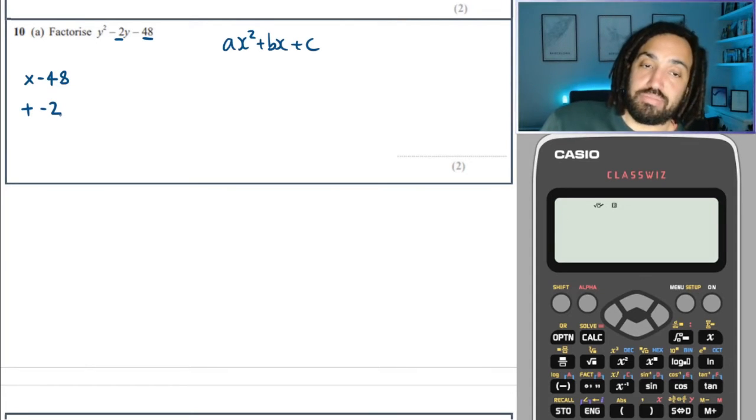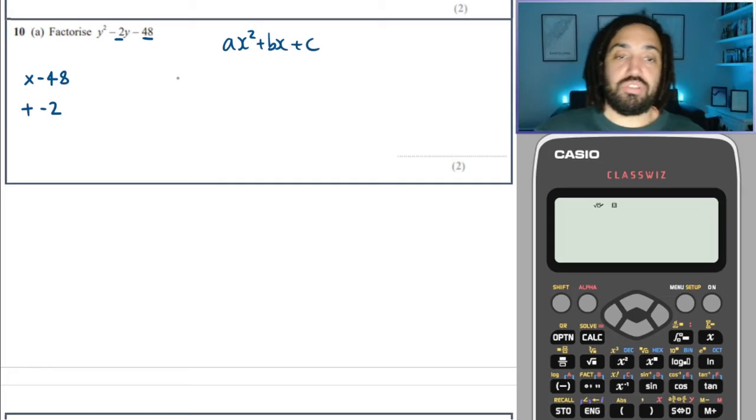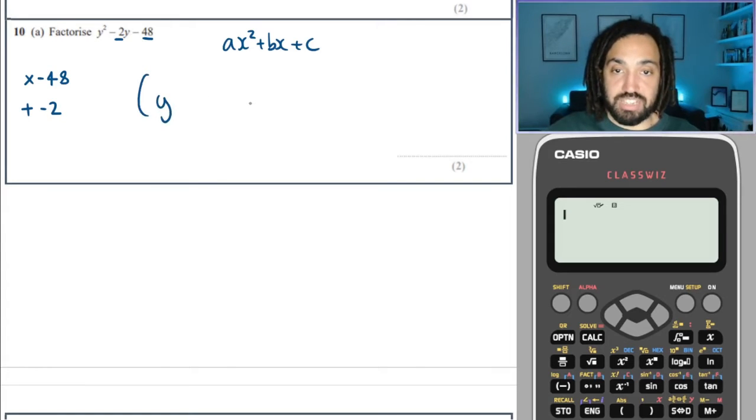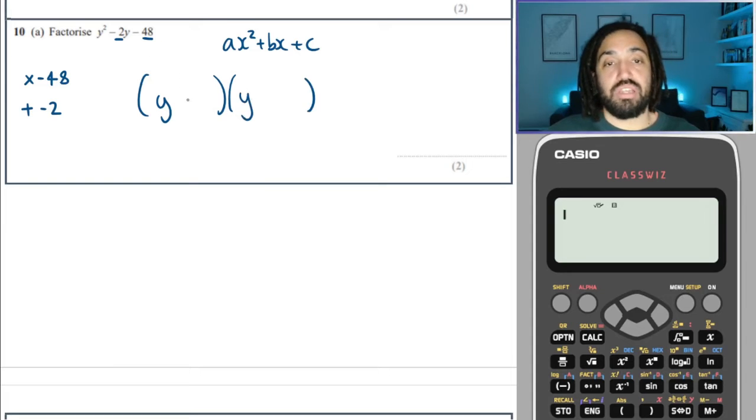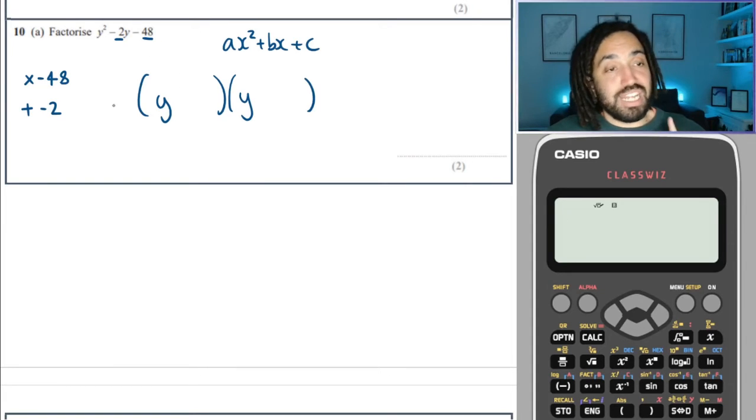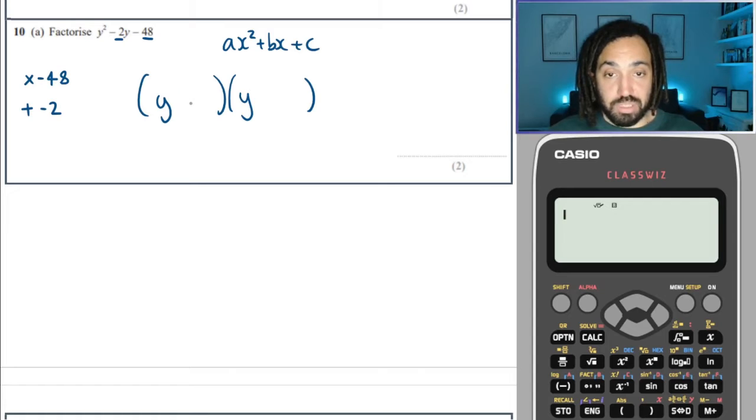So the C term is the constant term, which is this one here. And this, we need two numbers times to make minus 48, and this, the B term, is minus two. We need them to add to make minus two.